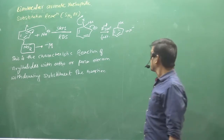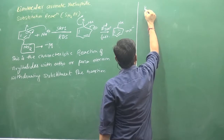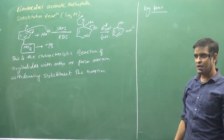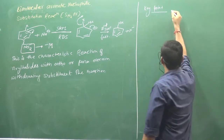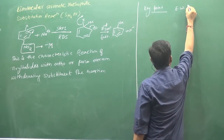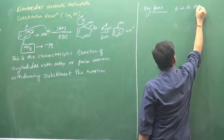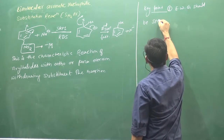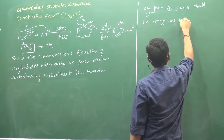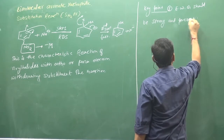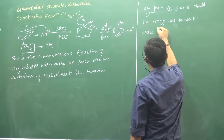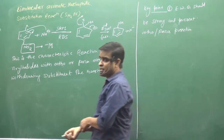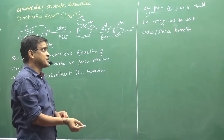So now we have some important points. First point: the electron withdrawing group should be strong and present at ortho and para positions.